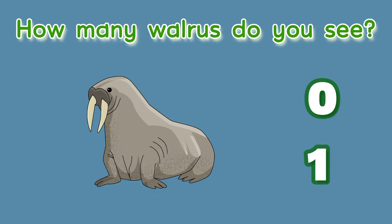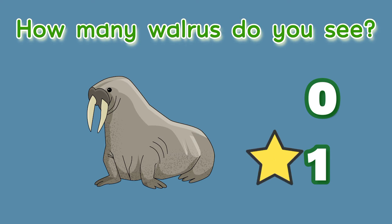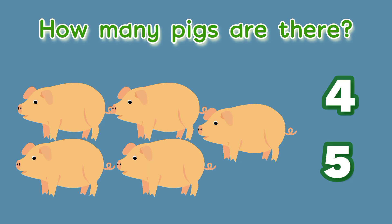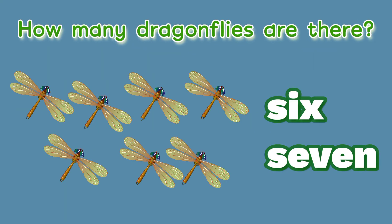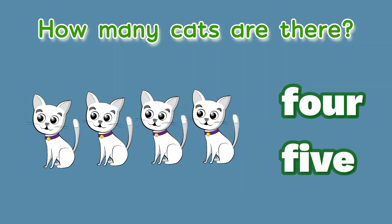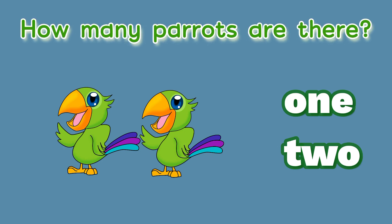How many walrus do you see? Only one. Right. How many pigs are there? Five pigs. Right. How many dragonflies are there? Right — seven. How many cats are there? Four cats. Correct. How many parrots are there? Two.